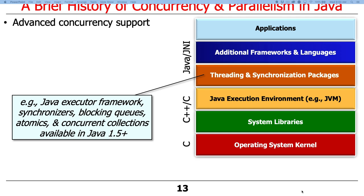With Java 1.5 — or Java 5, or JDK 5 — which came out around 2004, they added a whole pile of new capabilities. They added the Java Executor Framework, which allows you to work with pools of threads. They added a slew of new synchronizers much more powerful than the built-in monitor objects: things like ReentrantLock, ReentrantReadWriteLock, condition objects, semaphores, various kinds of latches and barriers, and so on.